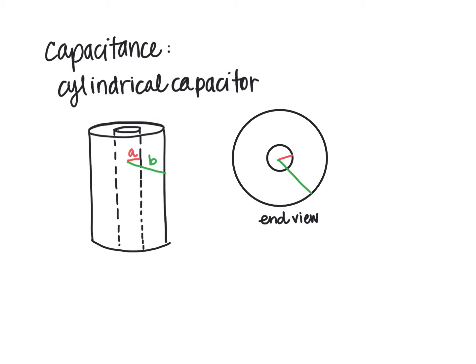There is a net positive charge on the inside cylinder and a net negative charge on the outside of the cylinder. The electric field in the cavity between the inside and outside would point from positive to negative. The electric field always points from high electric potential to low electric potential, so the inner cylinder is at a higher electric potential.